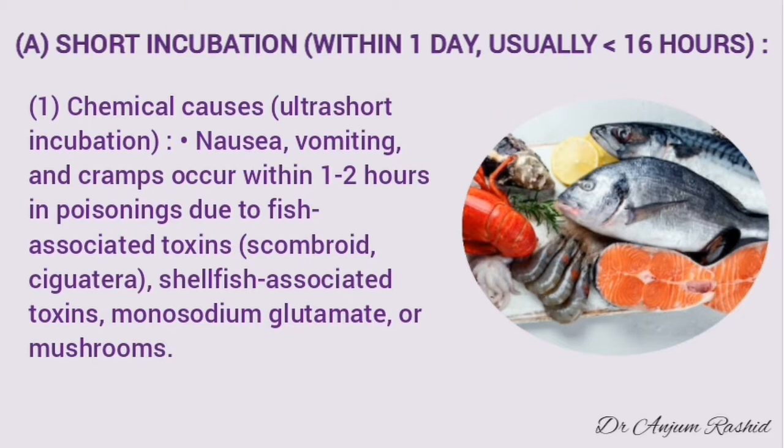In this first category are the chemical causes, which have an ultra-short incubation period. There is nausea, vomiting, and cramps which occur 1 to 2 hours in poisoning due to fish-associated toxins, which is usually scombridae or ciguatera. Other causes are shellfish-associated toxins, monosodium glutamate, or mushrooms.